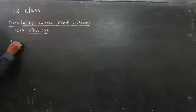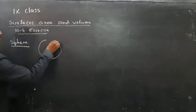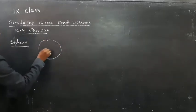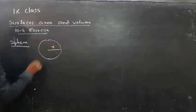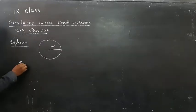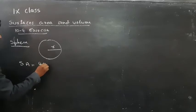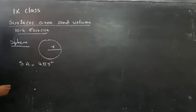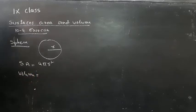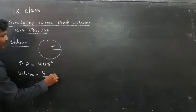This is nothing but a sphere. See here — the radius of this sphere is r. The surface area of a sphere is 4πr², and the volume of a sphere is (4/3)πr³.